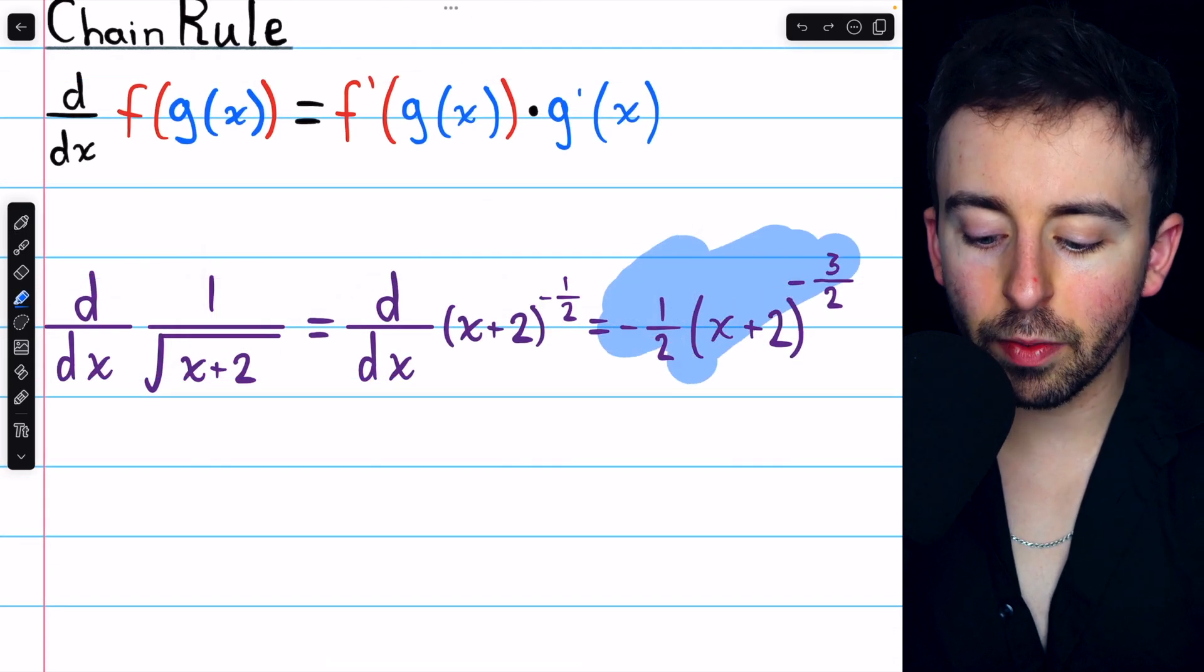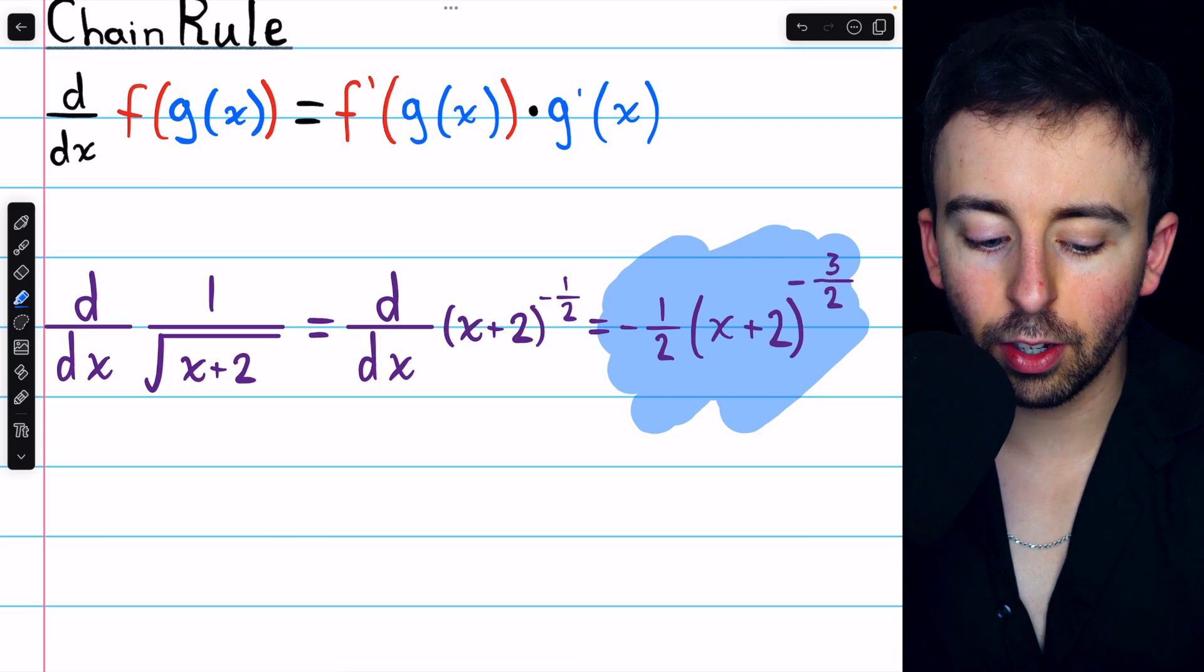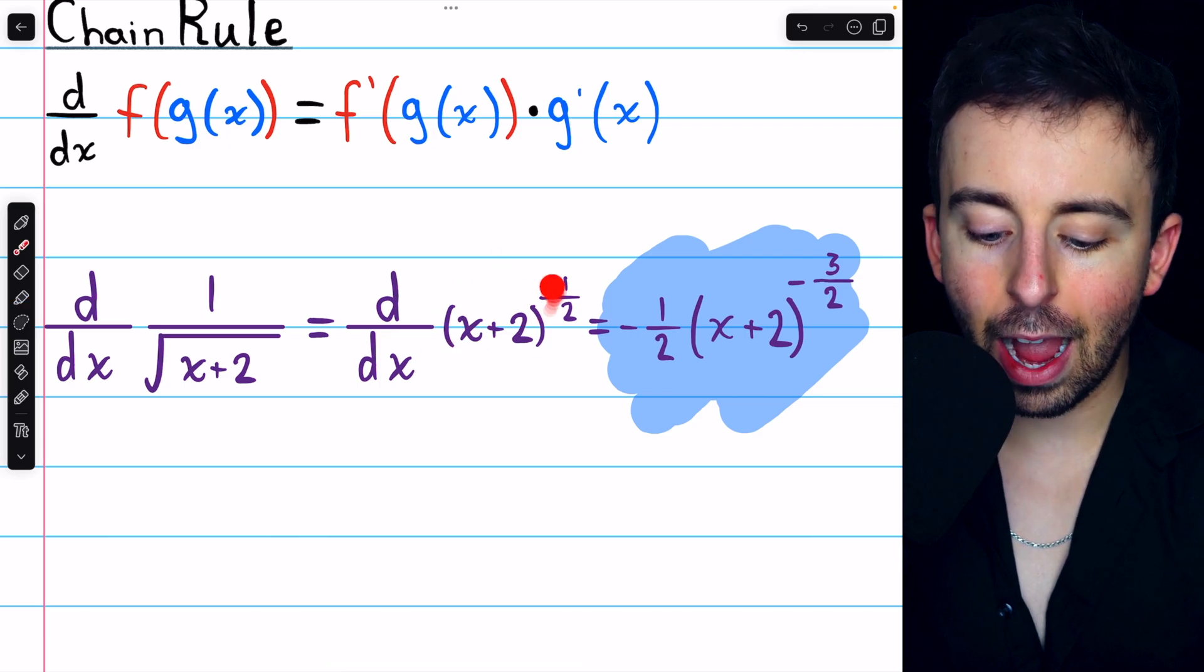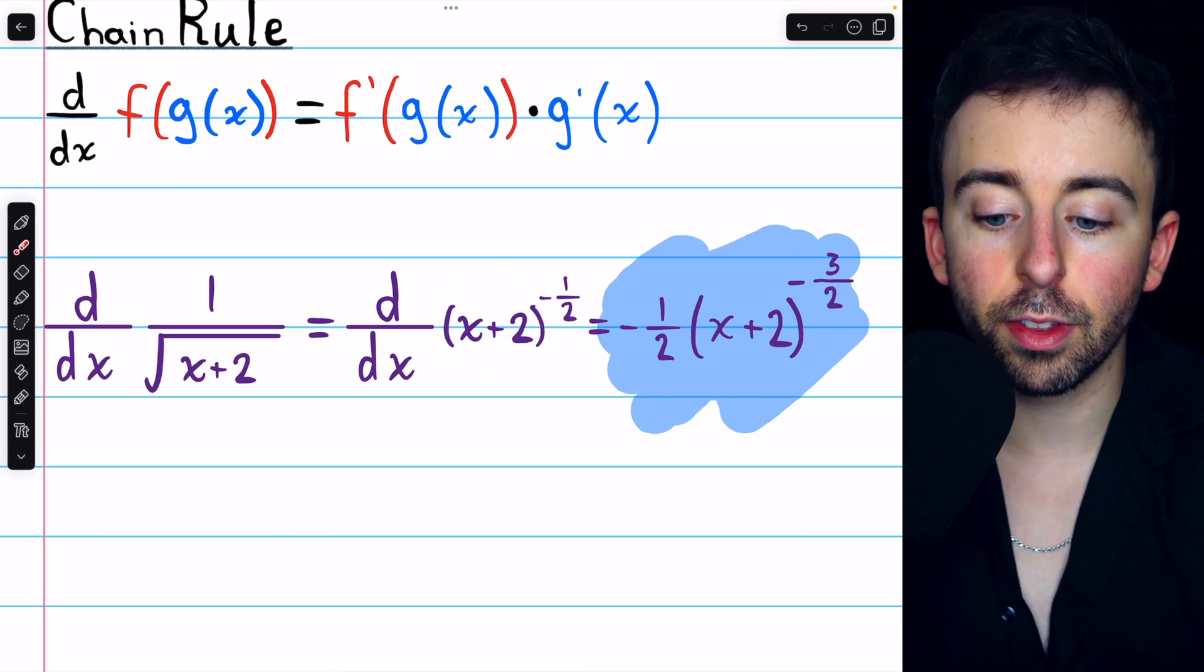And that is the derivative of 1 over the square root of x plus 2. Just rewrite it as a power of x plus 2, and then use the chain rule.